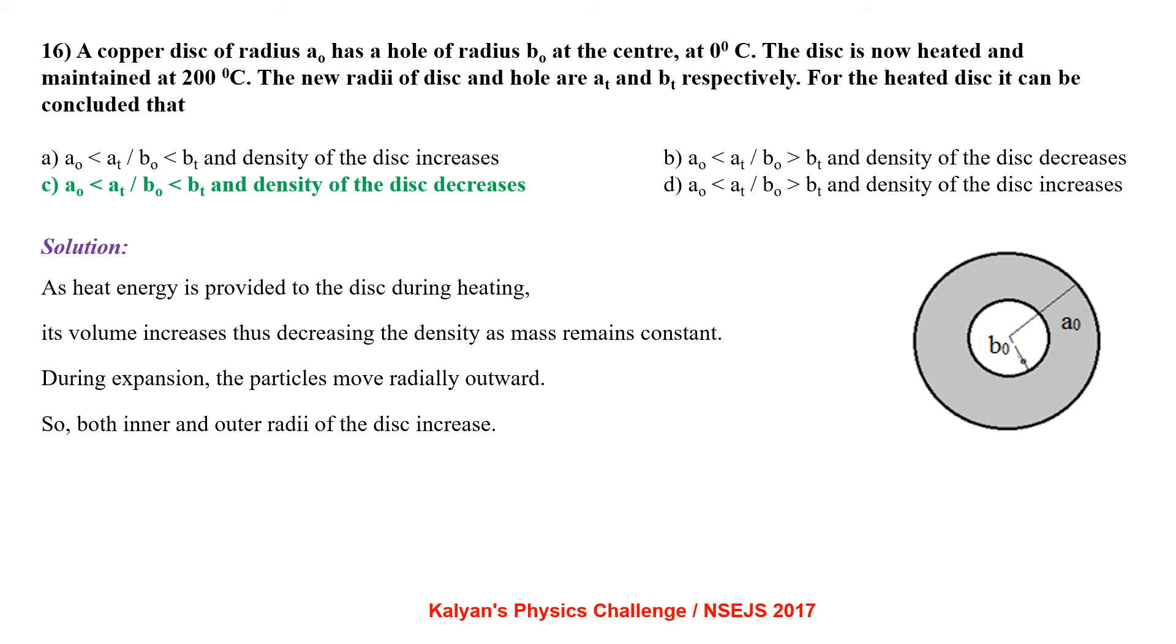As heat energy is provided to the disk during heating, its volume increases thus decreasing the density, as mass remains constant. During expansion the particles move radially outward so both inner and outer radii of the disk increase. So the correct option is C.